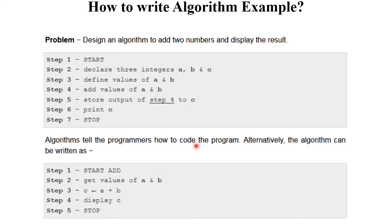Algorithm tells the programmers how to code the program. An alternative approach of algorithm is as follows — this is written in your own language, but we can also implement algorithm in a programmatic way. The first step is 'start add', meaning you have to perform addition. The second step is: get values of A and B — for example, implementing in C++ language using cin to read values. After that, perform A plus B and store the result into C. The next step is display C, and the last step is stop.